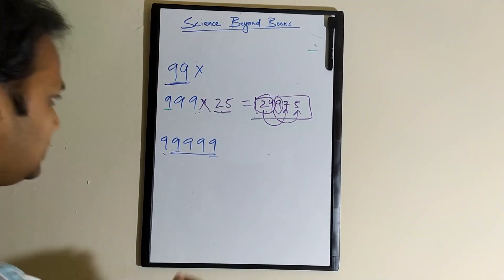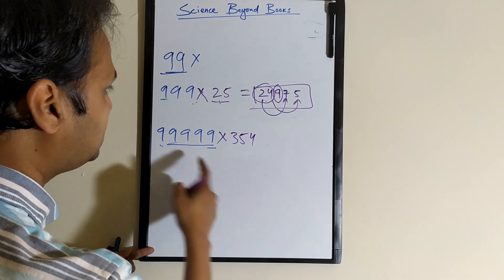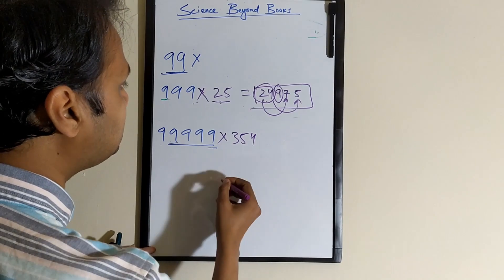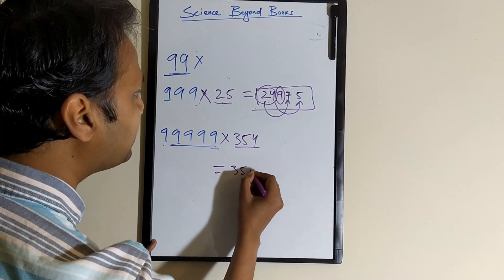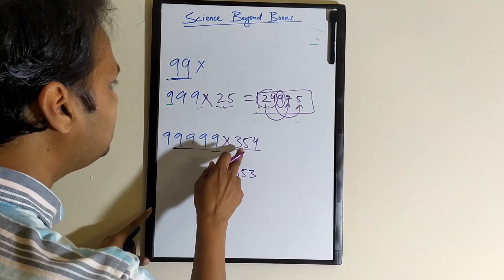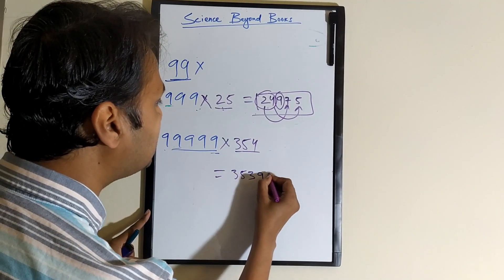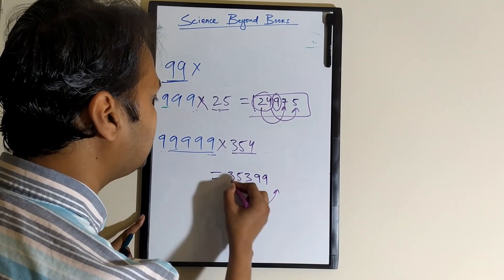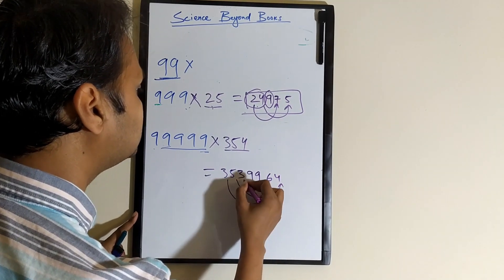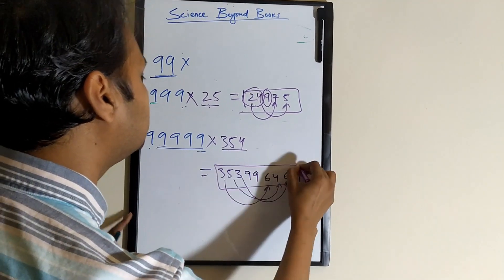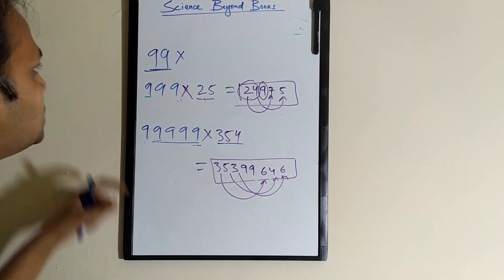Similarly, if you want to multiply 99999 by a 3-digit number, say for example 354 - this is a 5-digit number and a 3-digit number, so there are 2 digits of difference. Subtract 1, so it becomes 353. Then put two 9s for the difference. Then subtract each digit from 9: 9 minus 3 is 6, 9 minus 5 is 4, 9 minus 3 is 6. So your answer is 353 99 646.